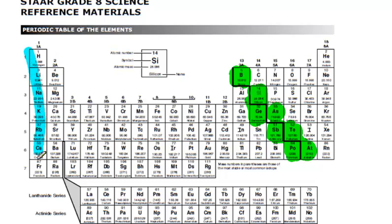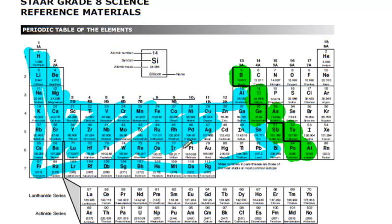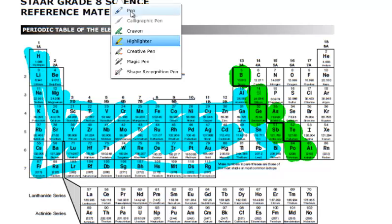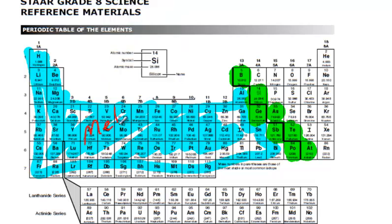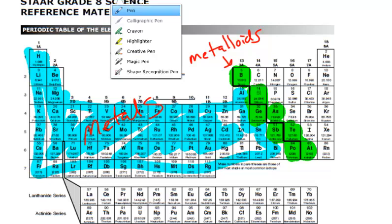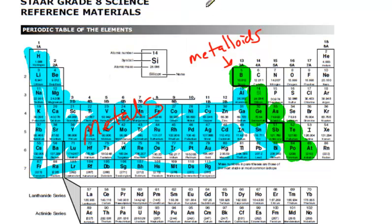All of the rest of these, everything here over, these are all considered metals. So these would be metals over here, these would be metalloids in green, and these over here, what we would consider non-metals.